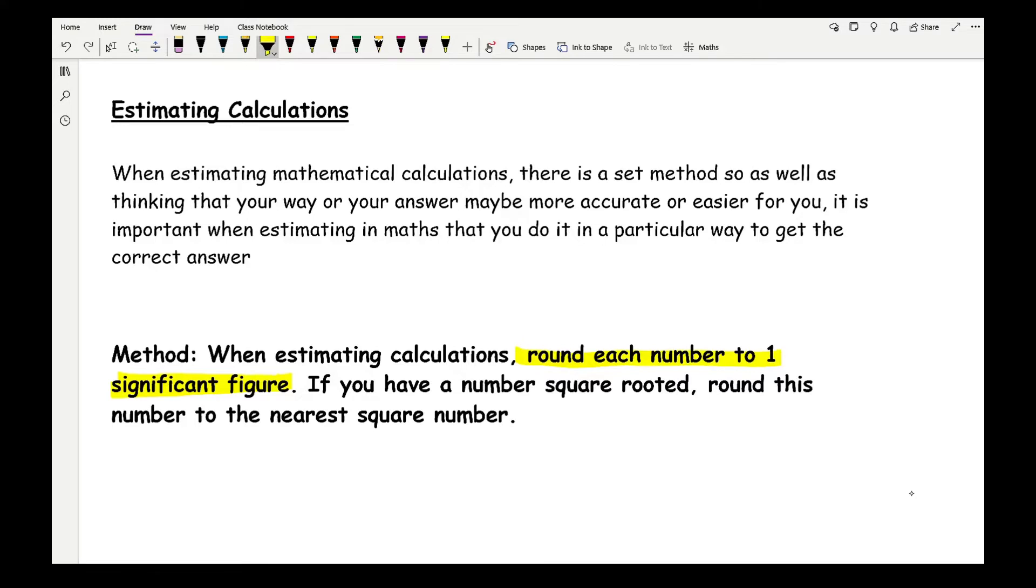The only exception to rounding to one sig fig is when you have numbers that are being square rooted. If you have a number being square rooted and you want to estimate, then what you need to do is round this number up to the nearest square number. So if I just put a bubble around this method, I'll explain to you what I mean by if you have a number square rooted.